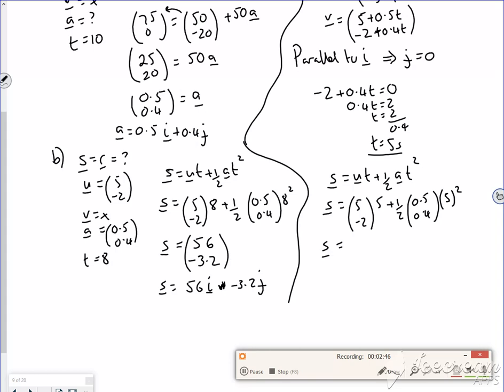So the top line would be 5 times 5 plus 0.5 times 0.5 times 5 squared, or if it's worth me just writing that out just to remind you. And the bottom line is -2 times 5 plus 0.5 of 0.4 times 5 squared.